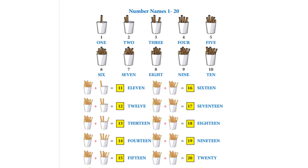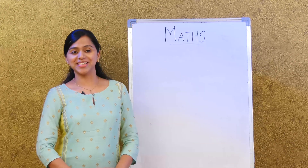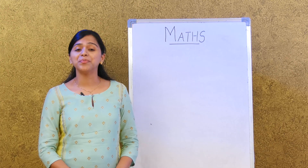Sixteen is S-I-X-T-E-E-N, seventeen is S-E-V-E-N-T-E-E-N, eighteen is E-I-G-H-T-E-E-N, nineteen is N-I-N-E-T-E-E-N, and twenty — T-W-E-N-T-Y — is 20. Very good.